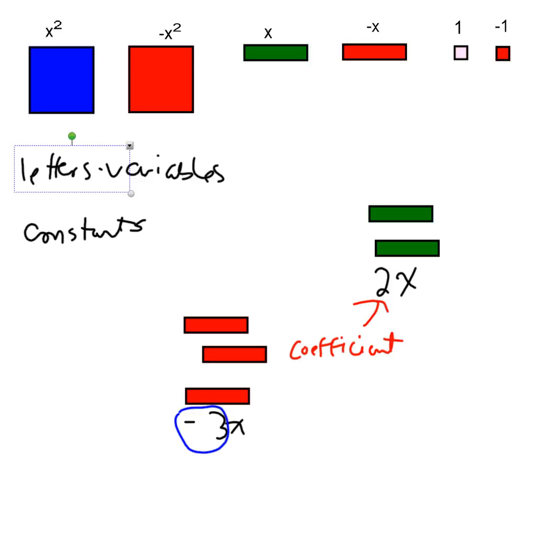When I put things together, like for example, let's say I have two x's and three of these. I create an expression, and I can call that expression 2x plus 3. Together, that whole thing equals the expression 2x plus 3.